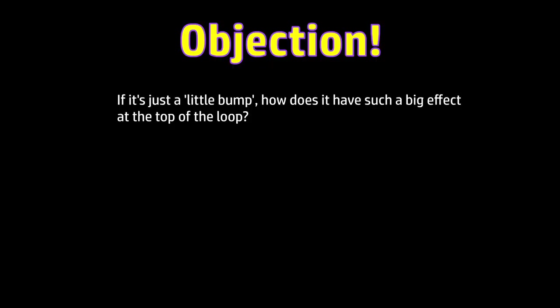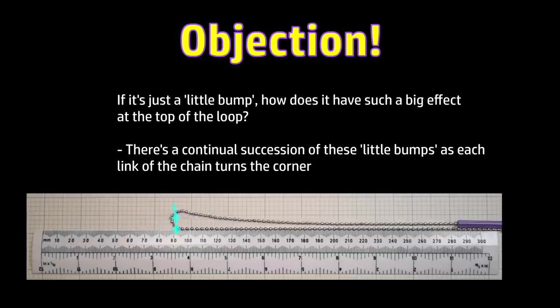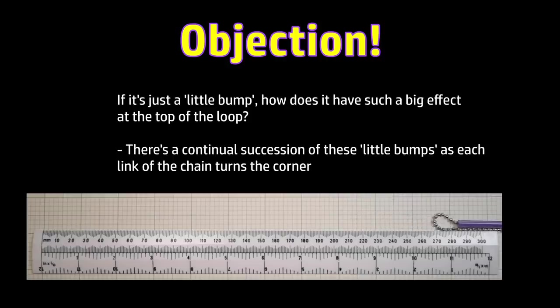Next, if it's just a little bump, equivalent to movement only of part of the minimum radius of the chain's curvature, how does it have such a big effect in making the top of the loop rise? The answer here seems pretty straightforward. There's a continual succession of chain links, all making this U-turn one after another, and all experiencing individually that little boost as they turn away from the constraint of the solid surface below them.